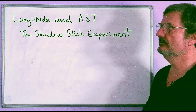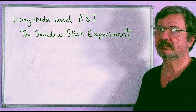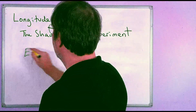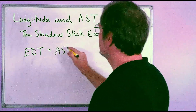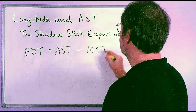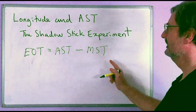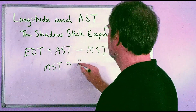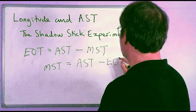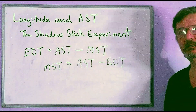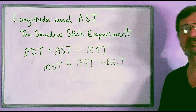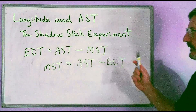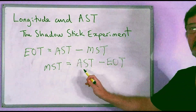To work out your longitude, you need to take the equation of time into account and work out your mean solar time. The equation of time is: apparent solar time minus mean solar time. Rearranging this, your mean solar time equals your apparent solar time minus the equation of time. You'll need to know the equation of time on the particular day you do the experiment — you can look that up on several websites. When the shadow is shortest, your apparent solar time is 12 o'clock.